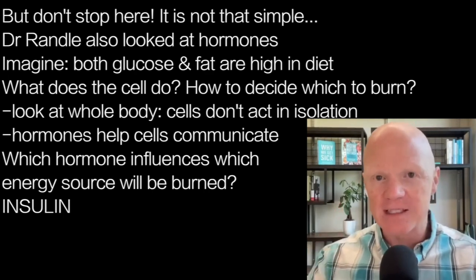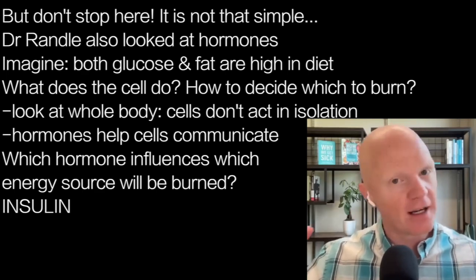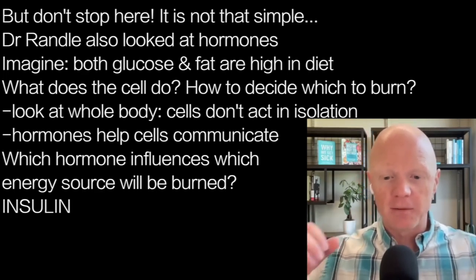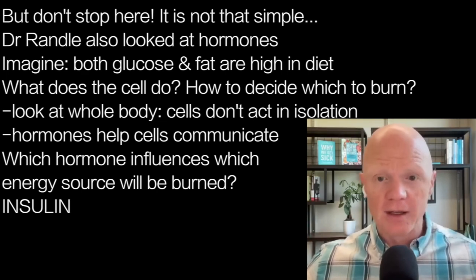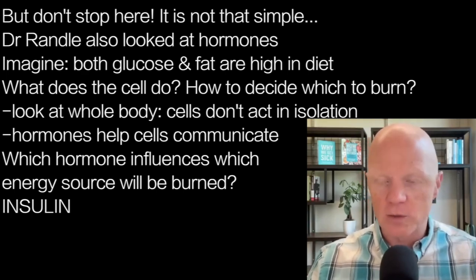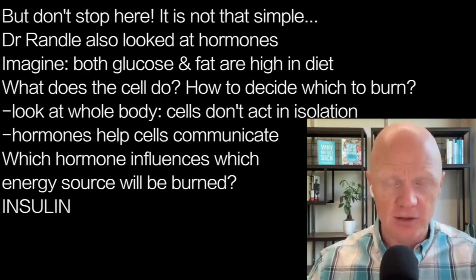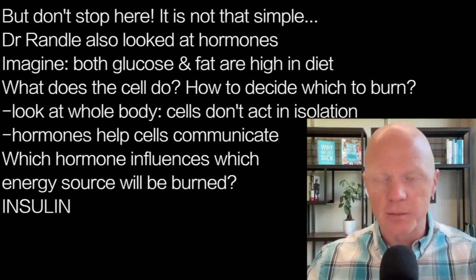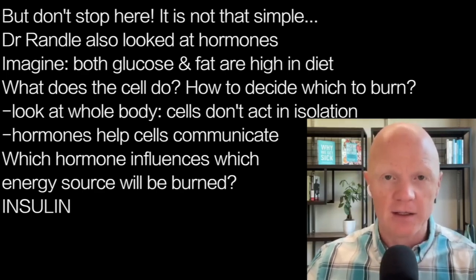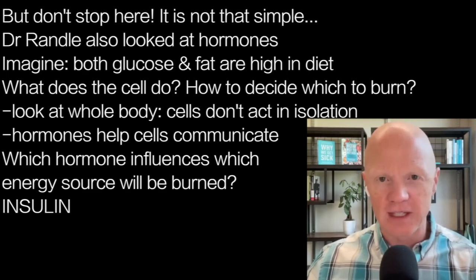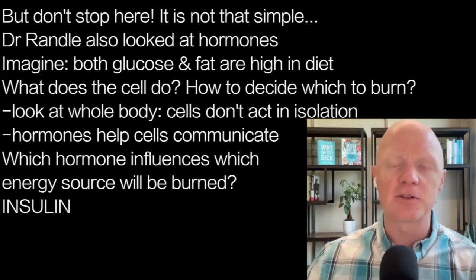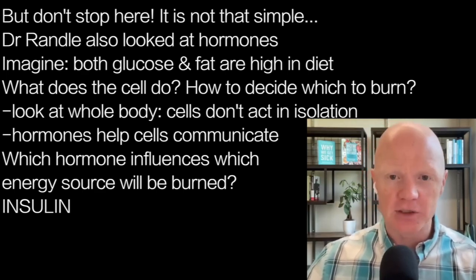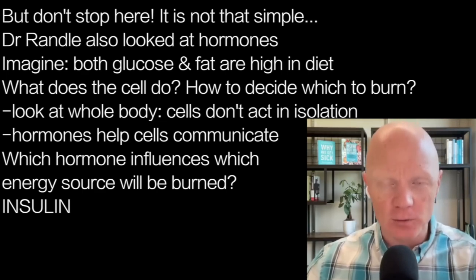The answer is in endocrinology. There is a hormone that ends up telling the cell what to do. Dr. Randle included this in his work — if we go beyond the experimental model of isolated perfused hearts and look at the whole organism, the cells aren't acting in isolation. It's hormones that allow different parts of the body to communicate. The Randle Cycle in the original mid-60s experiments looked at insulin and found it had a tremendous role in dictating which energy source was used. It plays a critical role — not the only one, but the most important.